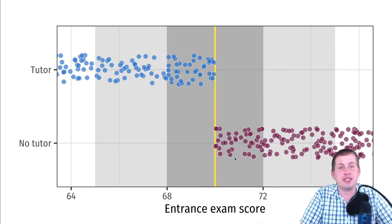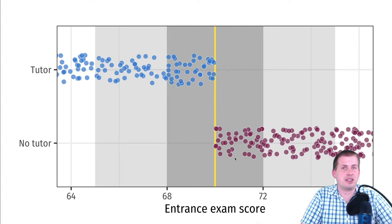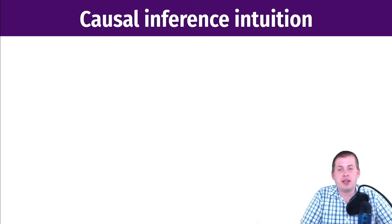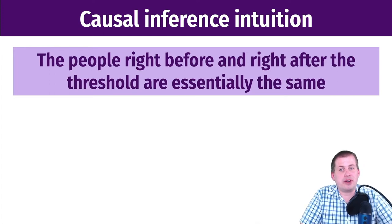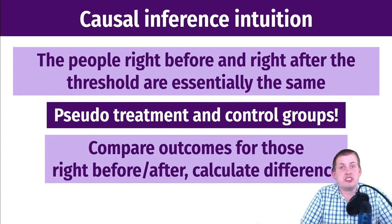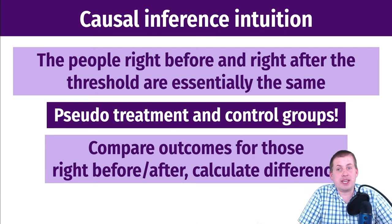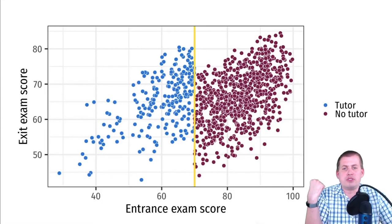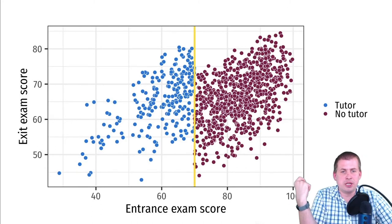That is the intuition: we're able to create a quasi-experiment with a treatment and control group that acts like a randomized controlled trial, using the story of this arbitrary cutoff to determine who is in each group. The people right before and right after the threshold are essentially the same, which gives us treatment and control groups. We can compare outcomes for people right before and right after the cutoff, calculate the difference, and that difference is the causal effect of the program for people close to the cutoff.